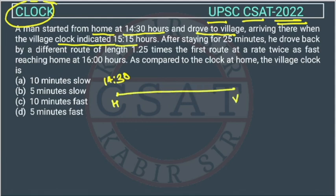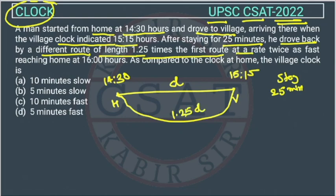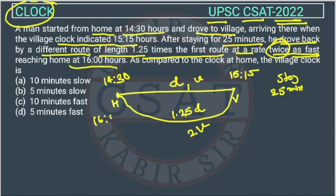So he is going to the village, where the clock shows 15:15. After staying for 25 minutes, he drove back by a different route of length 1.25 times the first route. Suppose the first distance is d, so the return route is 1.25d.